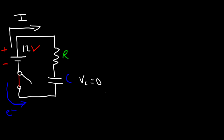Initially when the switch is open, the voltage of the capacitor will be zero. As soon as the switch is closed at T equals zero, the voltage will still be zero, but the voltage across the resistor initially will equal the voltage of the battery, which is 12. After some significant time has passed, the capacitor will be fully charged to a final voltage of 12. When the capacitor is fully charged, the voltage across the resistor is zero — because no current flows, and if there's no current through the resistor, its voltage is zero.